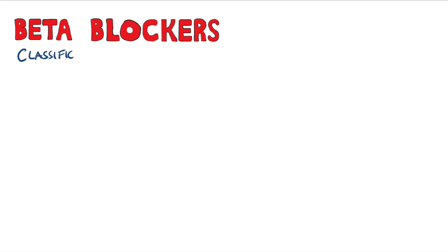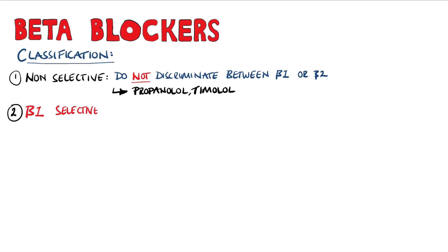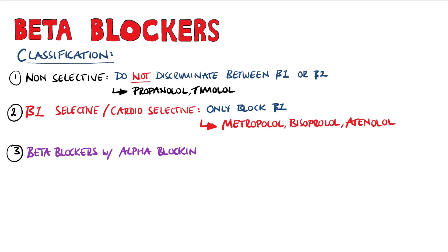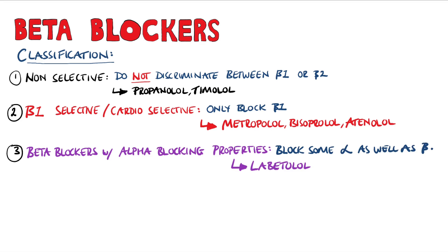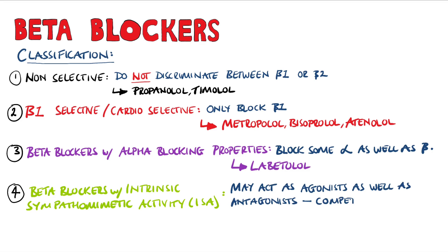For classification, beta-blockers are divided into several different classes based on which receptors they block. Non-selective beta-blockers don't discriminate between beta-1 or beta-2 receptors, and examples include propranolol and timolol. Beta-1 selective agents only block beta-1 receptors, and these include metoprolol, bisoprolol, and atenolol. Some beta-blockers also have alpha-blocking properties, such as labetalol. Finally, some beta-blockers have intrinsic sympathomimetic activity, meaning they can act as both agonists and antagonists on the beta receptors in a competitive way — examples include acebutolol and pindolol.